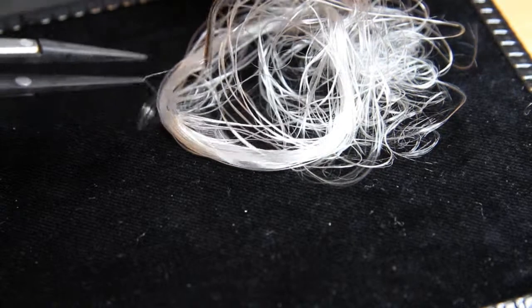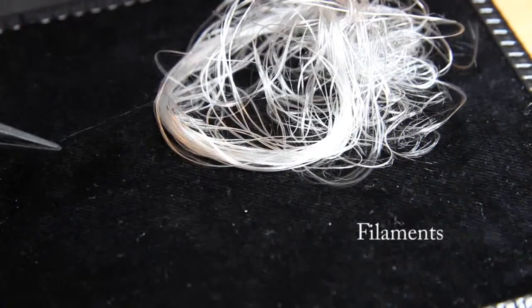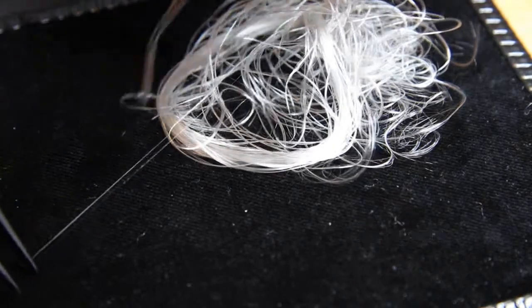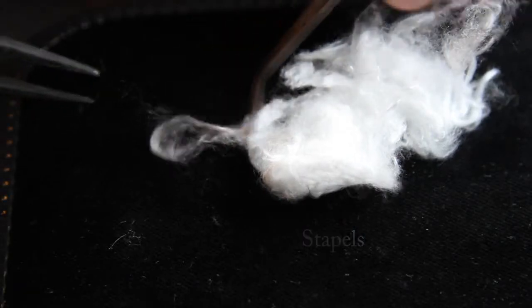When it comes to producing viscose fiber, we mainly talk about two types: filaments that are continuous, and staples that are fibers of a certain length.